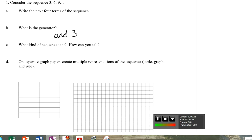Now that I've got it in my mind what the generator is, add three each time, I can pretty quickly say my next term would be 12, followed by 15, followed by 18, followed by 21. So that's adding three. That's my generator.